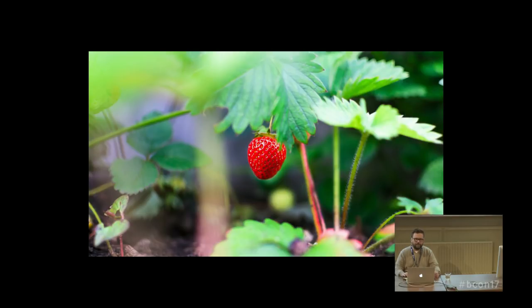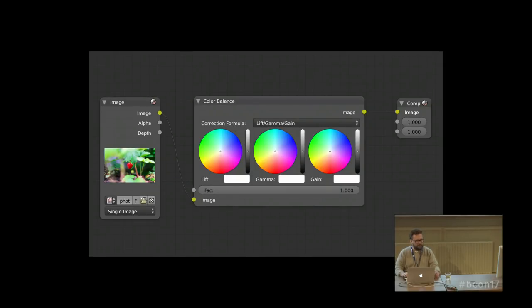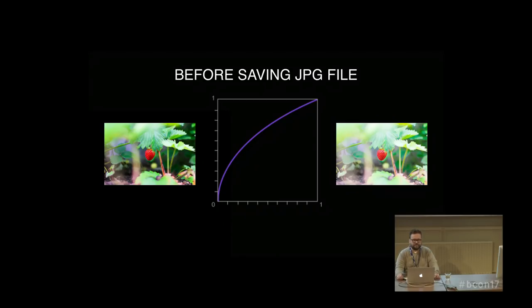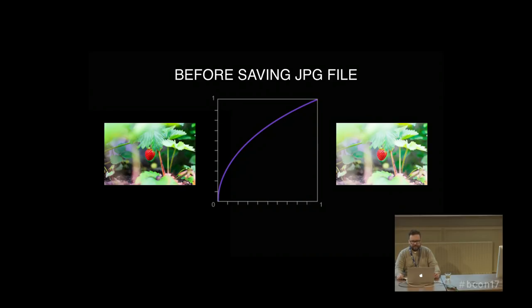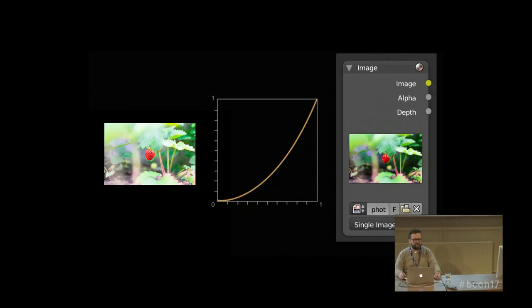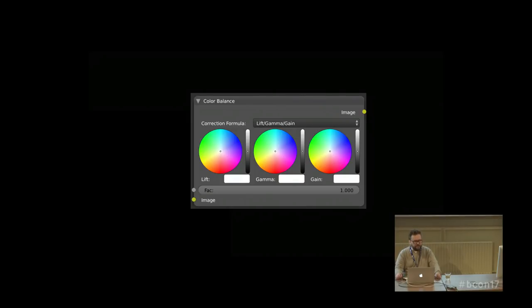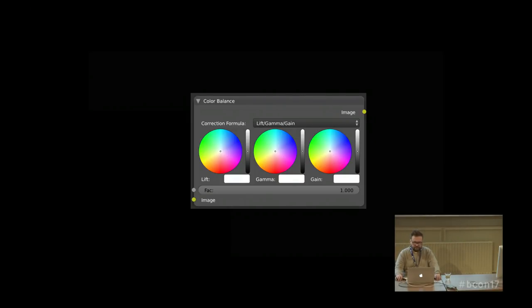Let's say we take a photo that looks like this, and we want to save it as a JPEG file. Then we bring this JPEG file into Blender's Compositor and pass it through the color balance node. Then we save our result as a JPEG image and display it on the monitor. Pretty simple stuff, but let's take a look at what happens under the hood. Before we save the image as a JPEG file, an adjustment called gamma encoding is done to it.